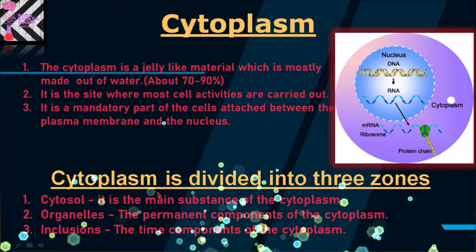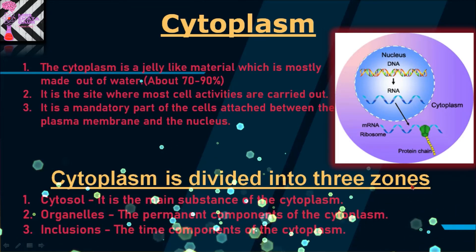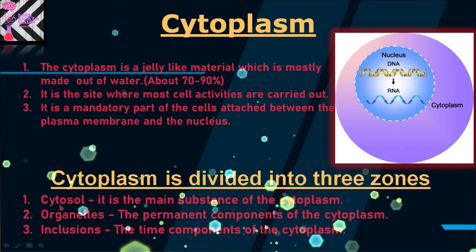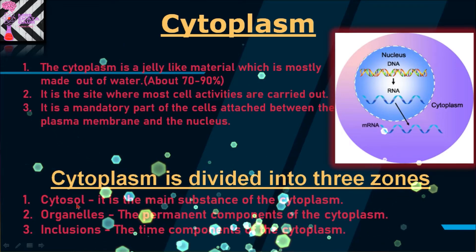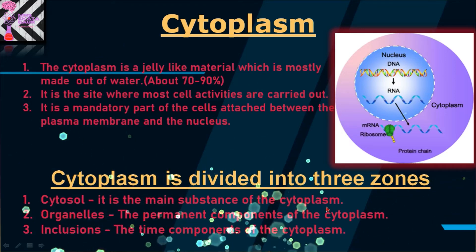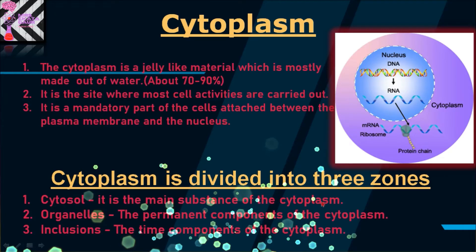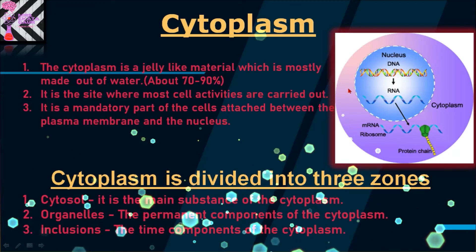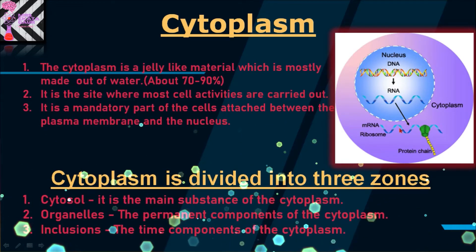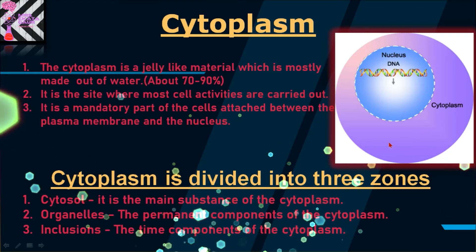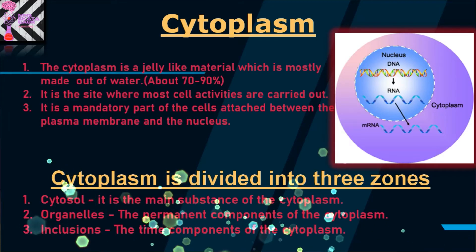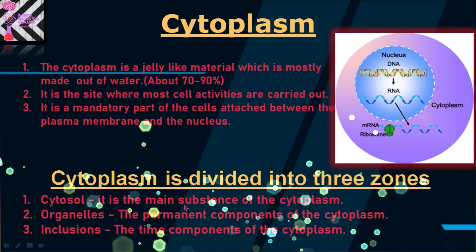Now, cytoplasm is divided into three zones. First is the cytosol — it is the main substance of the cytoplasm. The fluid filled in the cytoplasm is known as cytosol. Second is the organelles, which are the permanent components of the cytoplasm.